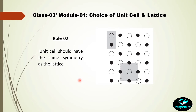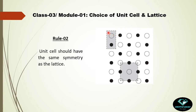Rule 2 states: the unit cell should have the same symmetry as the lattice. Consider a square grid pattern — connecting motif points through lines gives a square, so the lattice is a square grid. This means the pattern has a four-fold rotational axis at its center: rotating 90 degrees superimposes each open circle onto the next, giving an identical image.